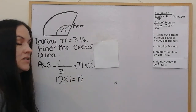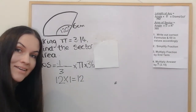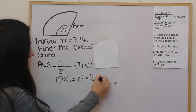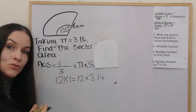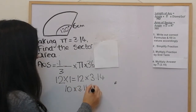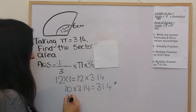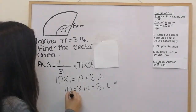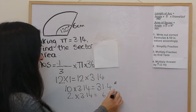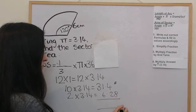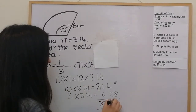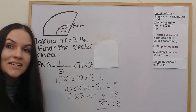The next step is to multiply that answer by pi, which is 3.14. Doing this non-calculator: 10 times 3.14 is 31.4, and 2 times 3.14 is 6.28. Adding them together gives 37.68. Since this is area, the units are centimetres squared.